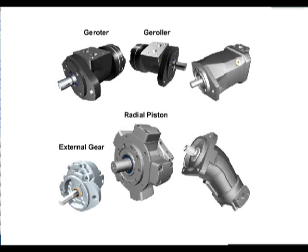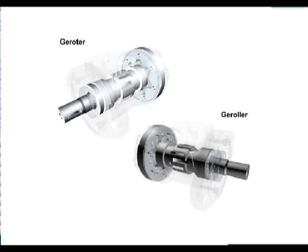While piston type motors can be used as fixed displacement actuators, axial and bent axis motors can also be used as variable displacement actuators. The gerotor and gerroller motors are a fixed displacement actuator, which are low-speed, high-torque, bi-directional motors. They are considered durable, compact in size, and inexpensive.